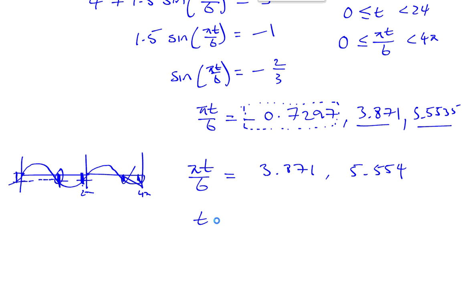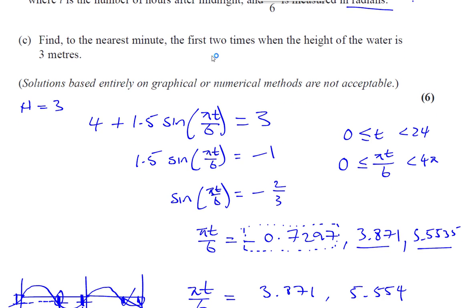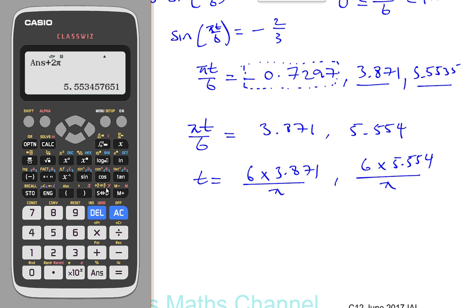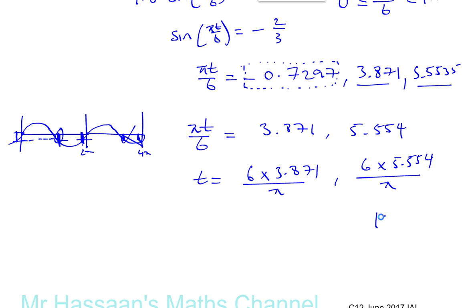Now I can find what t is. I've got to multiply by 6 and divide by pi. So I'll have 6 times 3.871 divided by pi, and I'll have 6 times 5.554 divided by pi. So we're going to have that times 6 divided by pi, which gives us 10.606. That's 10.606.